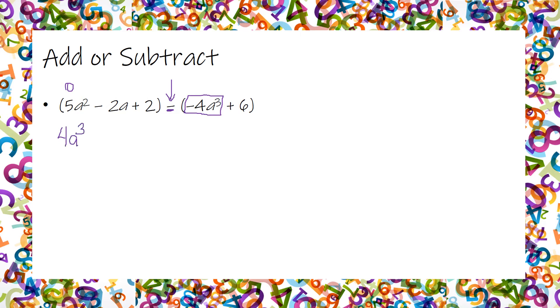Then we have 5a squared minus nothing. There's not another a squared over there, so I can just write it down.